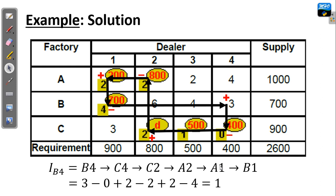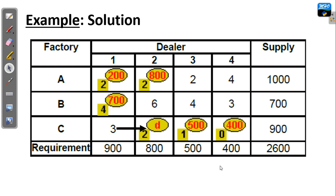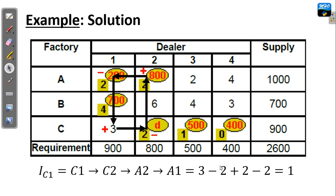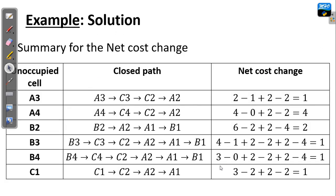The last cell is C1. We start from C1 to C2, then upward, to the left, downward, giving signs plus, minus, plus, minus. Adding the costs with their respective signs, we get a net cost change of positive 1. Here we have the summary of all the net cost changes from the loops. All the net cost changes are positive, which means the current solution is the optimal solution. Therefore, we don't need further treatment or improvement of that solution.